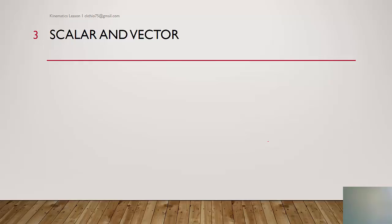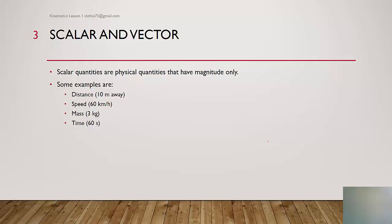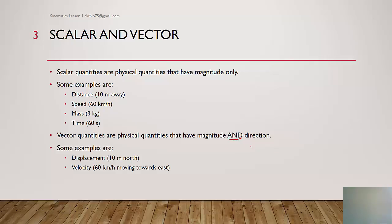Before we understand displacement and distance, or velocity and speed, we need to understand the difference between scalar and vector. Scalar quantities have magnitude only — examples include distance, speed, mass, and time. Vector quantities have both magnitude and direction. Examples include displacement — instead of just saying 10 meters, we say 10 meters north — and velocity, like 60 kilometers per hour moving towards east.